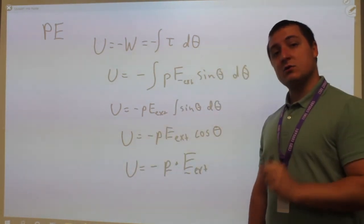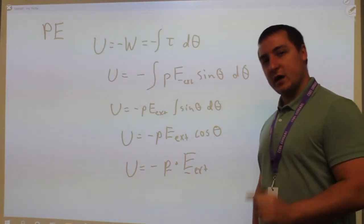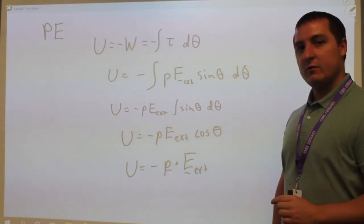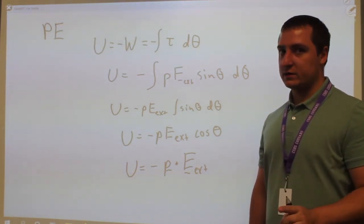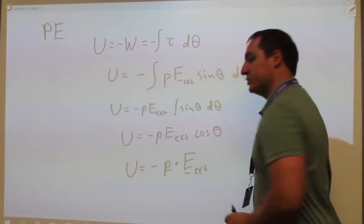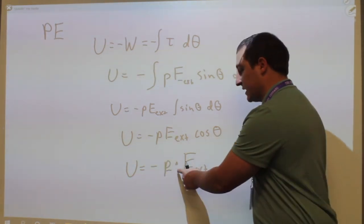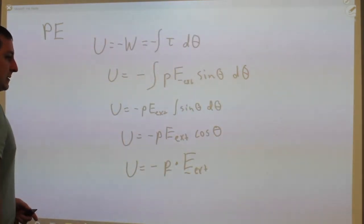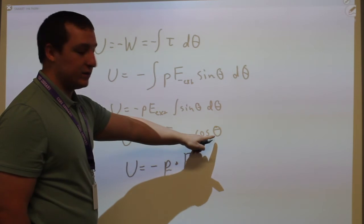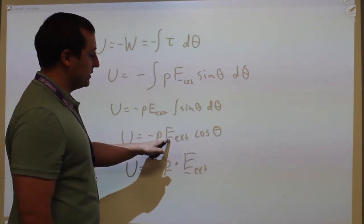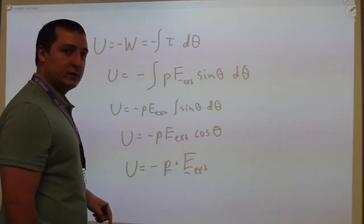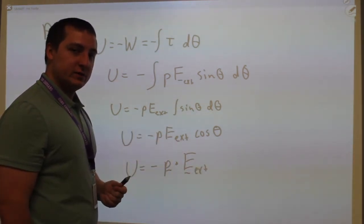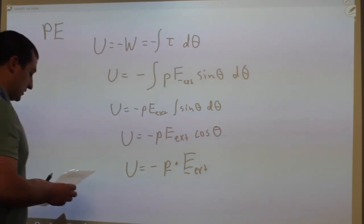Torque is a cross product; potential energy is a dot product with a minus sign — pretty easy to remember. Torque is a vector so you need the vector product, and potential energy is a scalar so you need the scalar product. The angle here is the angle between the external field and the dipole moment, and that's why you get the cosine — the dot product gives you the angle between the two vectors.